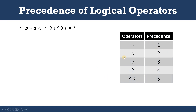This is the precedence table for the logical operators. So, what if I am given a compound proposition? It will be very confusing. In this sort of scenario, the precedence table will help us determine the correct order of evaluation.